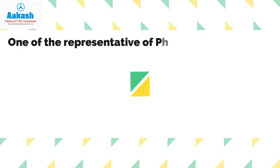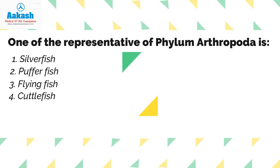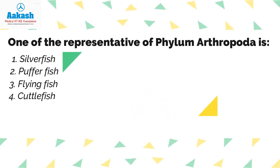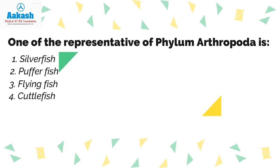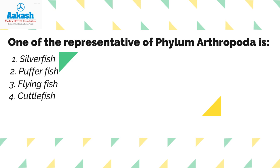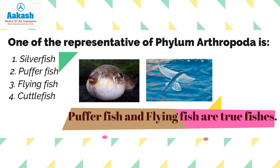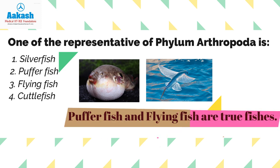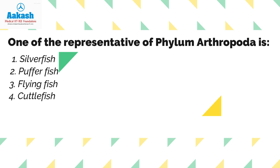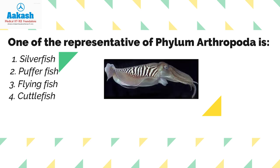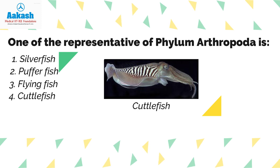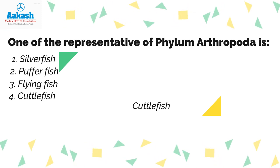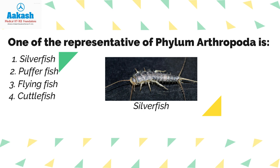One of the representatives of phylum Arthropoda — so we have four options related to fish. First of all, we need to know what is a true fish and a false fish. True fish are those that belong to superclass Pisces. Here, puffer fish and flying fish are two true fish, so the second and third options are eliminated because the question asks about Arthropoda. For the fourth option, cuttle fish belongs to mollusca, so it is also eliminated. What remains belongs to phylum Arthropoda, so the answer is option one.